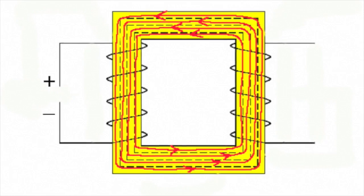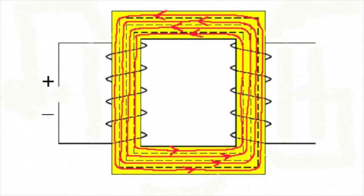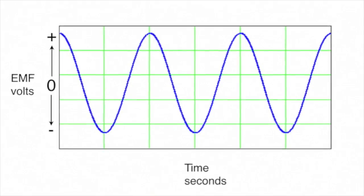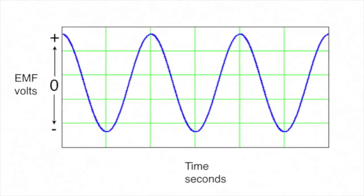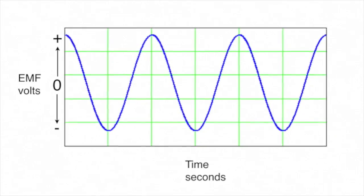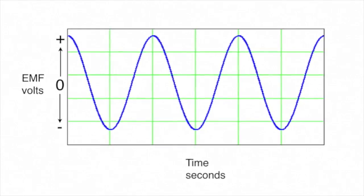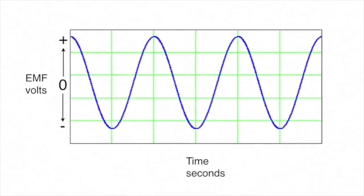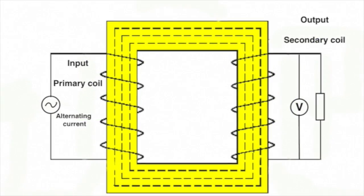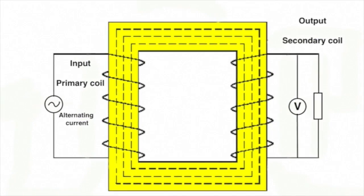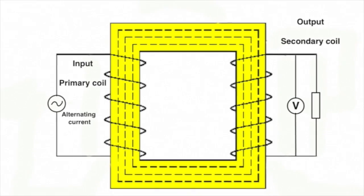A problem to overcome is that this changing magnetic field is also cutting through the core itself, which is made of iron and therefore a conductor. If we make the core of solid iron, this current swirls around in the core, absorbing energy from the transformer and also heating the core.